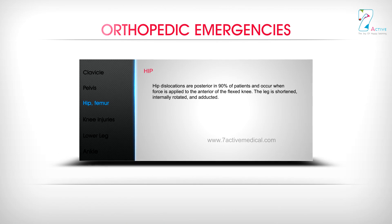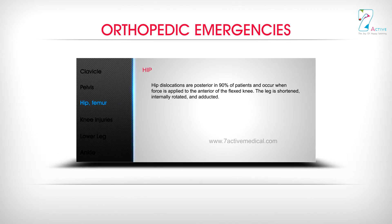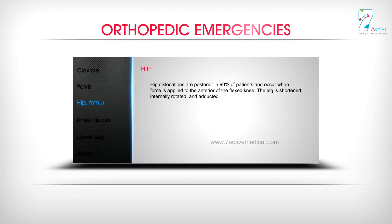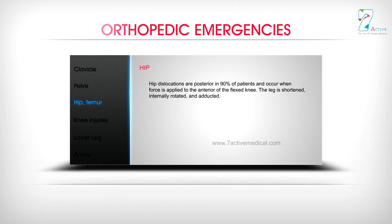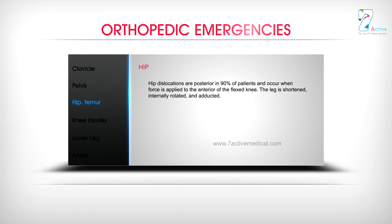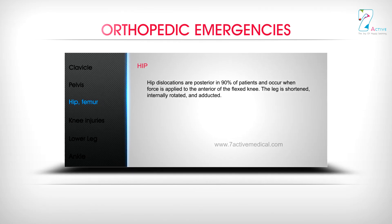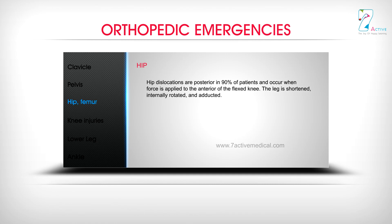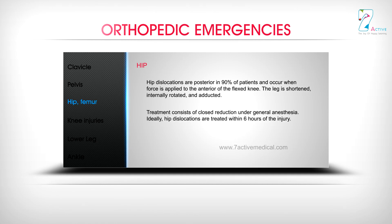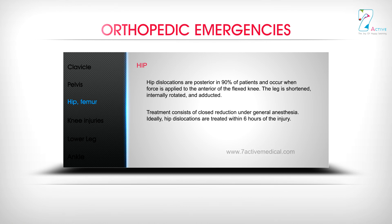Hip: Hip dislocations are posterior in 90% of patients and occur when force is applied to the anterior of the flexed knee. The leg is shortened, internally rotated, and adducted. Treatment consists of closed reduction under general anesthesia. Ideally, hip dislocations are treated within 6 hours of the injury.